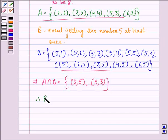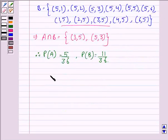Therefore, probability of event A is 5 by 36. Probability of event B is 11 by 36 and probability of A intersection B is equal to 2 by 36.